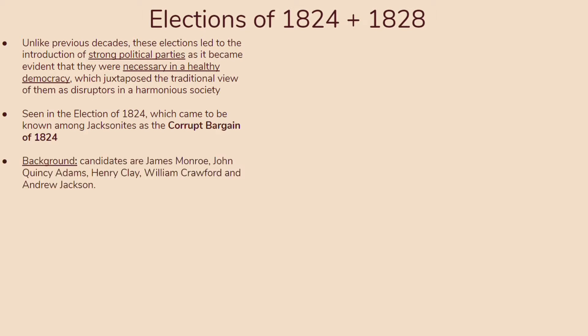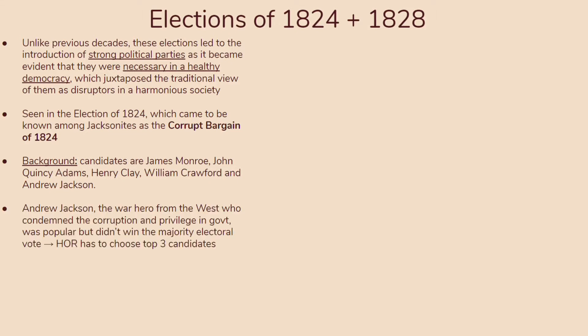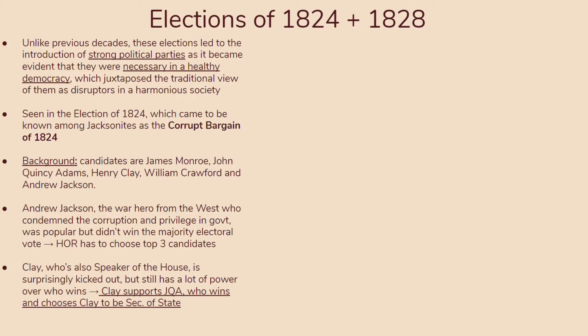The candidates for the election were James Monroe, John Quincy Adams, Henry Clay, William Crawford, and Andrew Jackson. Andrew Jackson, the war hero from the West and the Battle of New Orleans, condemned corruption and privilege in government. He was very popular, but he didn't win the majority electoral vote. So the House of Representatives had to choose the top three candidates. Henry Clay, also the Speaker of the House, was kicked out but still had power over who wins. Clay supported John Quincy Adams, who won and chose Clay as Secretary of State.